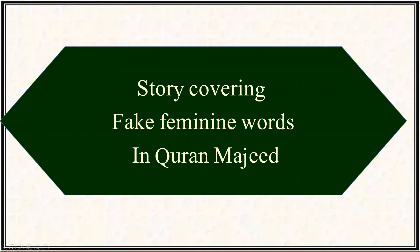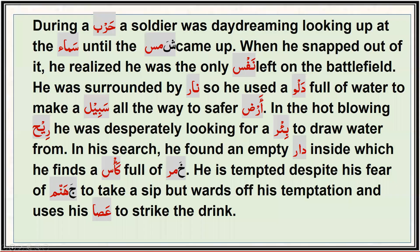The remaining miscellaneous words can be memorized with the help of a short story covering all fake feminine words used in the Quran. The story: a man was daydreaming and looking up at the sama' (sky) until shams (sun) came up. He realized he was the only nafs (soul) left on the battlefield, surrounded by nar (fire). He used a dalw (bucket) full of water to make a path all the way to saff, desperately looking for a bi'r (well) to draw water from. Inside an empty dar (house), he finds a ka's (cup) full of khamr (wine), but words of his taqwa strike him, and he uses his 'asa (staff) to strike away the drink.